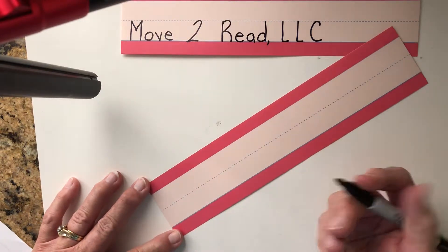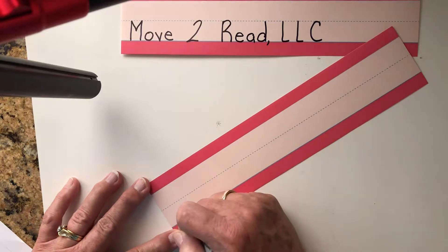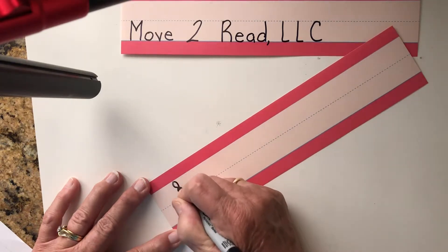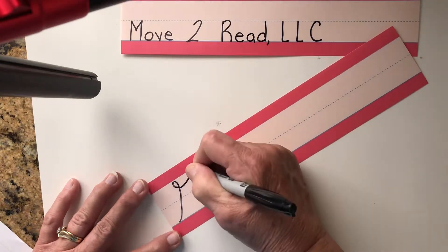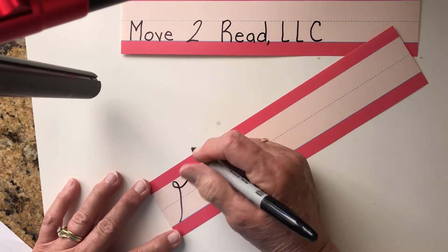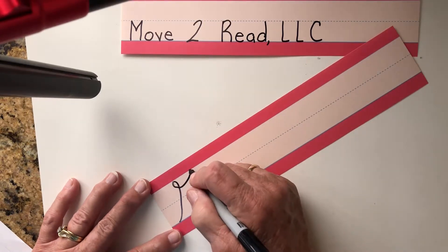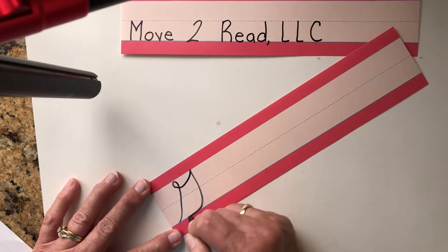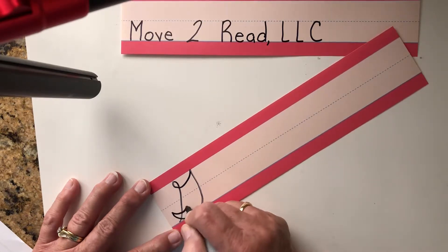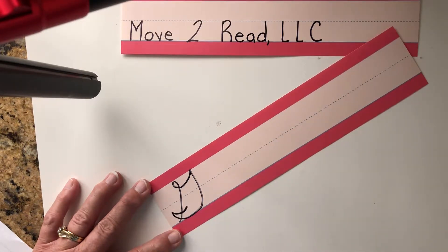Okay, so on the uppercase G, you're starting at the bottom. You're going to swoosh around, make this little swooshy up to the top line, go down, make a big tummy, and then put a little smile on the other side.